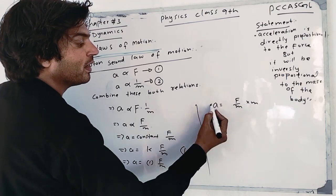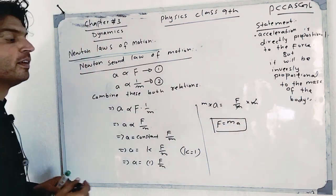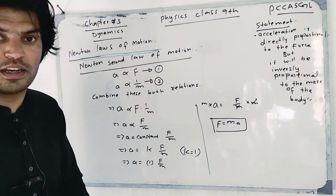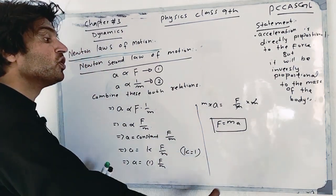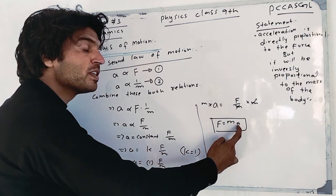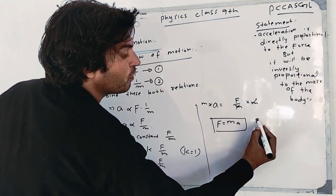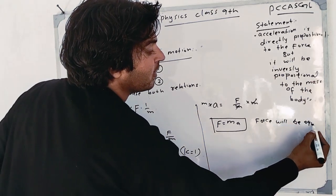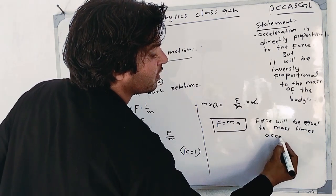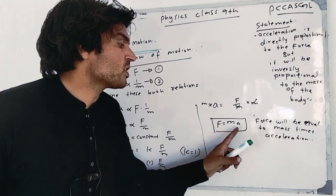To remove the proportionality sign, we introduce a constant. If we multiply both sides by M, M cancels on one side, giving F equal to M times A. So F = MA. That is the meaning of Newton's Second Law of Motion: Force equals mass times acceleration.